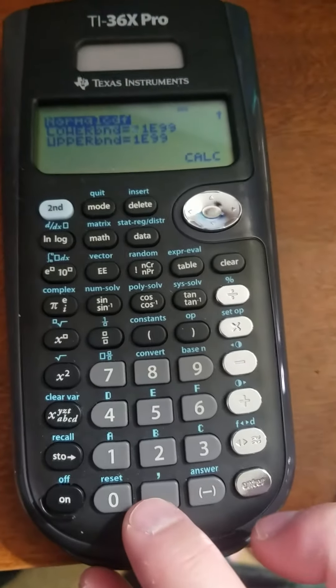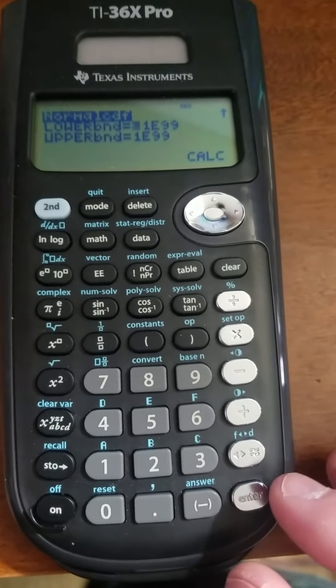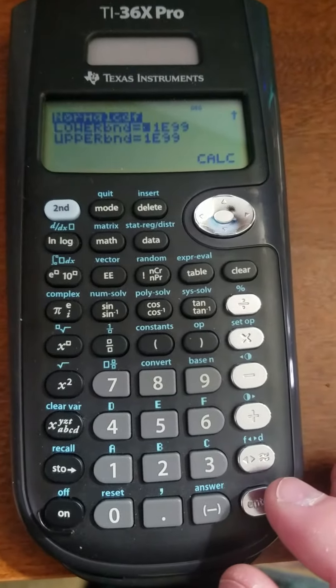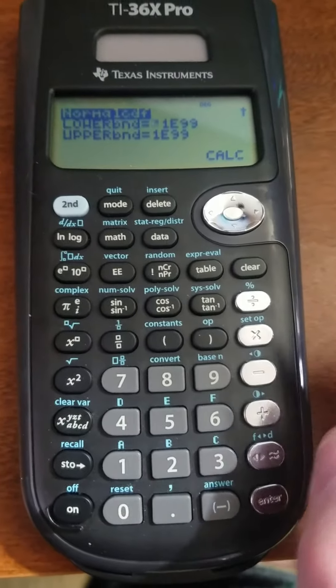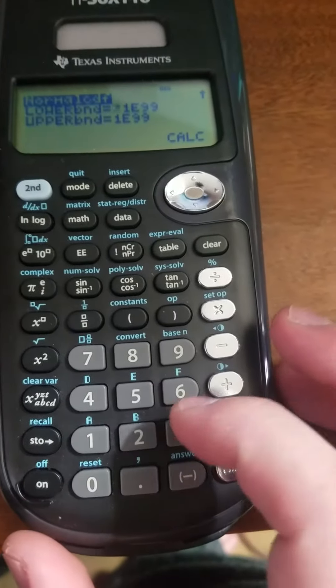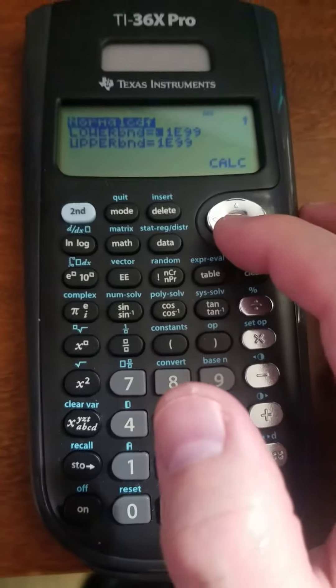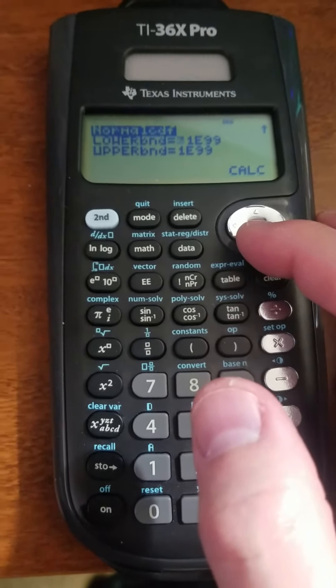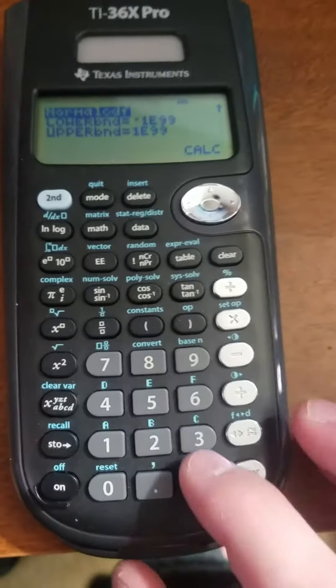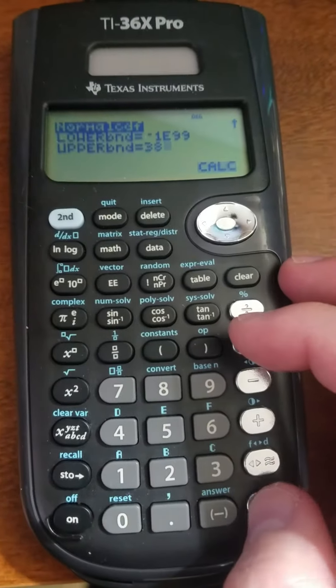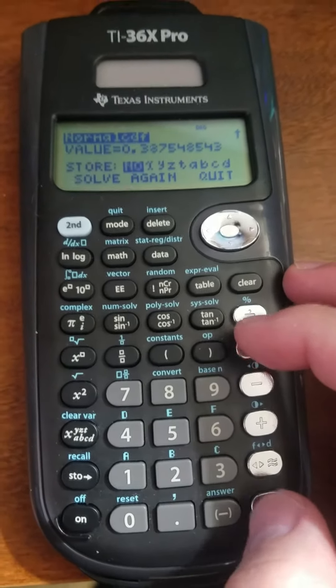So if I wanted to find the probability of being less than—what was my mean? I think my mean was 40. So if I wanted to find the probability of being less than 38, that means my lower bound is negative infinity and my upper bound is 38. I type that in there and this gives me my value.